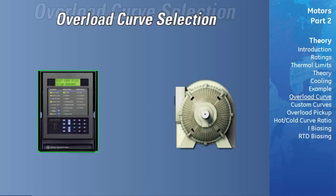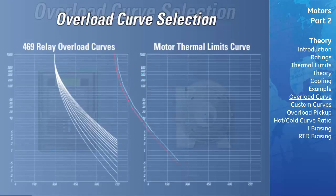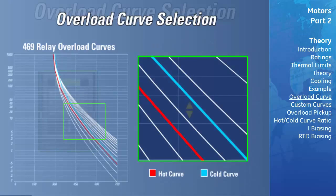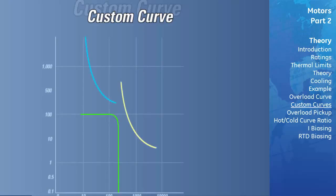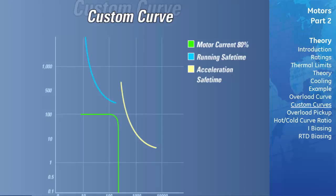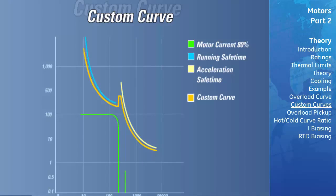Overload Curve Selection. The modern digital relay has multiple standard overload curves which can be chosen to provide accurate protection for the motor. In selecting a curve, the engineer would overlay the standard curves to determine the best fit. The overload curve should be chosen such that it is just below the cold thermal limit and above the hot thermal limit. With the hot-cold curve ratio programmed correctly, the overload curves are automatically adjusted whether the motor is hot or cold. A custom overload curve feature allows users to tailor the relay's thermal damage curve to the motor, allowing a successful start without compromising protection, by entering trip times for 30 predetermined current levels.